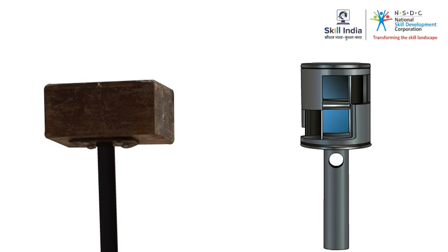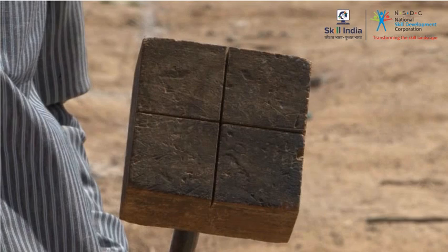In this module you have learnt how to identify the instruments required for right angles and how to use those instruments. One of those instruments is the cross staff, which consists of a pole mounted with an arrangement of slits called sighting vanes.